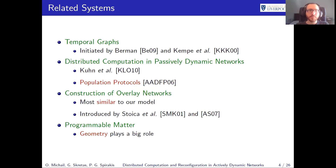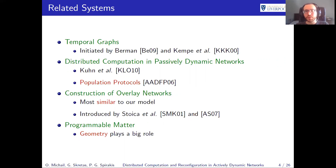Regarding related systems, there are quite a lot. We have temporal graphs, but most of that work assumes a central coordinator. We have distributed computation in passively dynamic networks — for example, the population protocol system, which is taking the Dijkstra award this year, but that involves passively dynamic networks, not actively dynamic ones. We have overlay networks, which are most similar to our model, but they typically use different measures. Finally, there is programmable matter, which uses exactly the same model but also incorporates geometry, which plays a very big role. Programmable matter was a lot of our motivation — we asked whether we could create more abstract models usable for programmable matter.